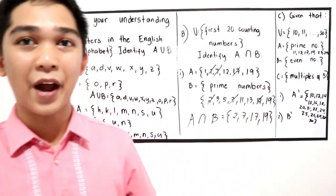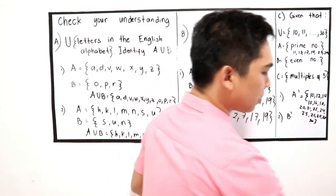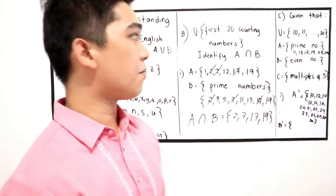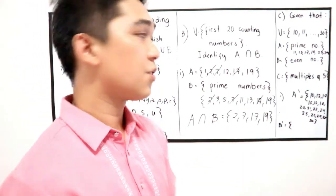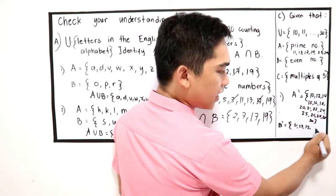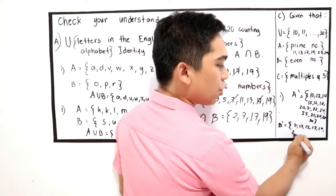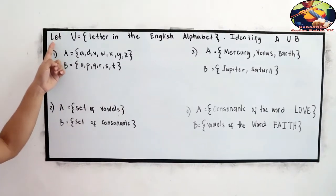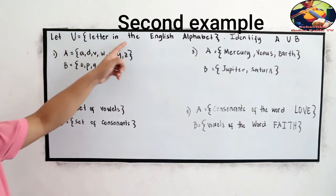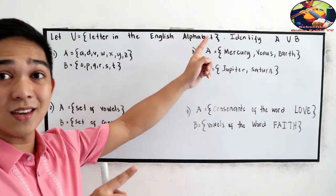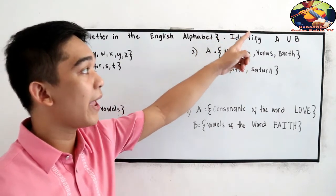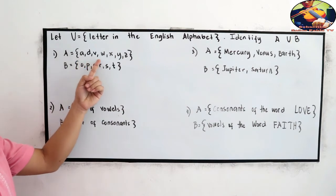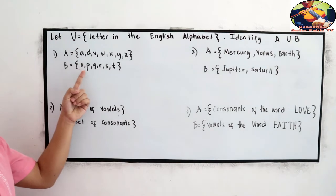Next, find B prime. B is even numbers, so removing all even numbers from U, the remaining odd numbers are B prime = {11, 13, 15, 17, 19, 21, 23, 25, 27, 29}. Now for the check-your-understanding activity: let U be the letters of the English alphabet. For number 1, set A = {A, D, V, W, X, Y, Z} and set B = {O, P, Q, R, S, T}.